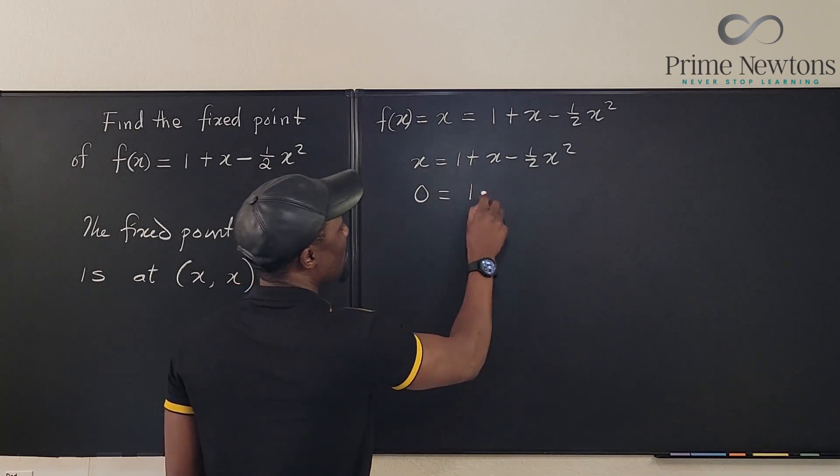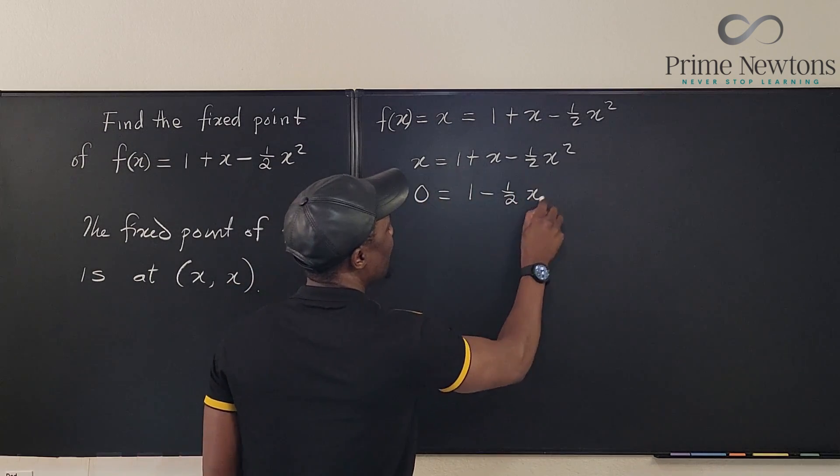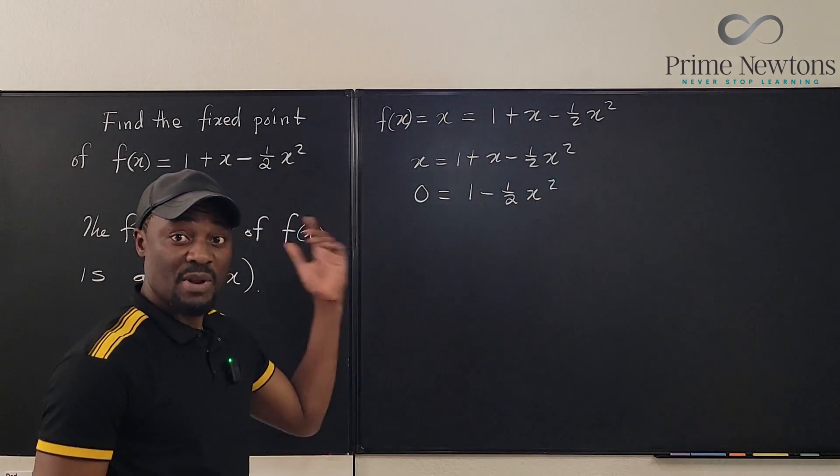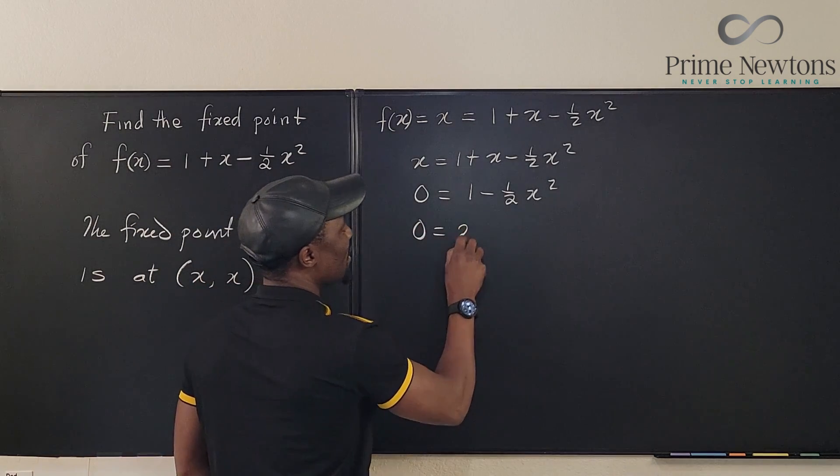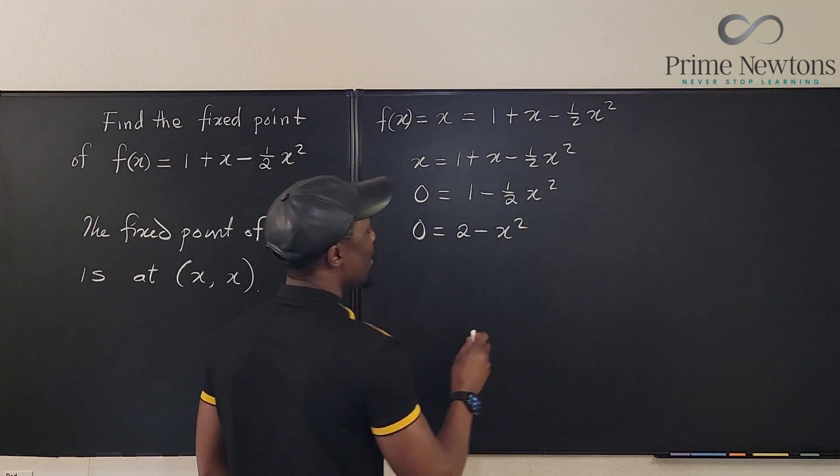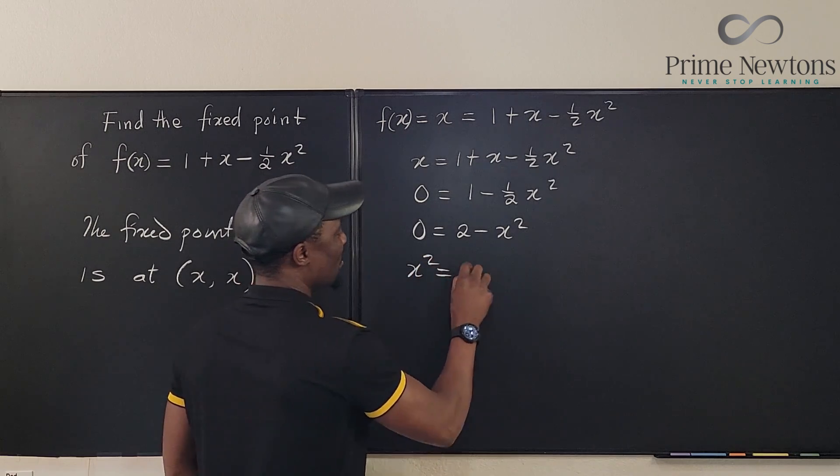If we multiply everything by 2, what do we get? We get 0 equals 2 minus x squared, so that x squared is equal to 2.